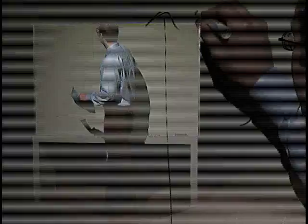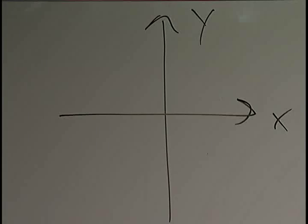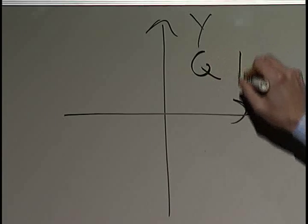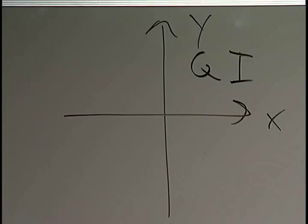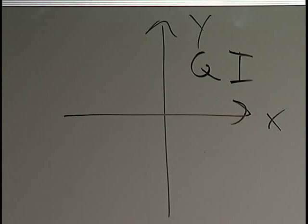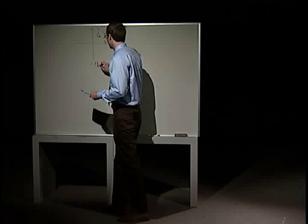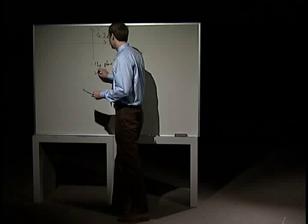We're used to working with the x, y plane in single variable, where we have quadrants. Quad 1 is where you have x and y both greater than 0. Quads 2, 3, and 4 depend on the signs of x and y as well. So from this point on, we'll refer to this as the plane or two-space.